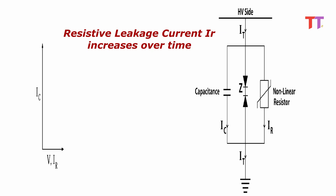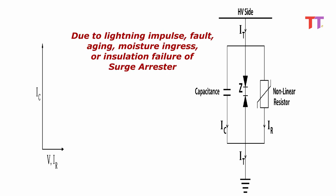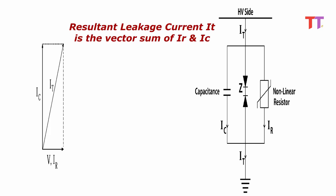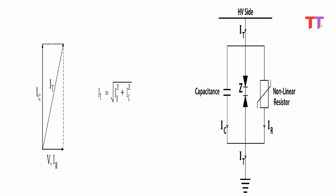Resistive leakage current IR increases over time due to lightning impulse, fault, aging, moisture ingress, or insulation failure of the surge arrestor. Resultant leakage current IT is the vector sum of IR and IC. The magnitude of total leakage current IT is equal to the square root of the addition of squares of IR and IC. Let's say resistive leakage current IR of LA increases over time to a new value IR1. Hence, new resultant leakage current IT also increases and becomes IT1.